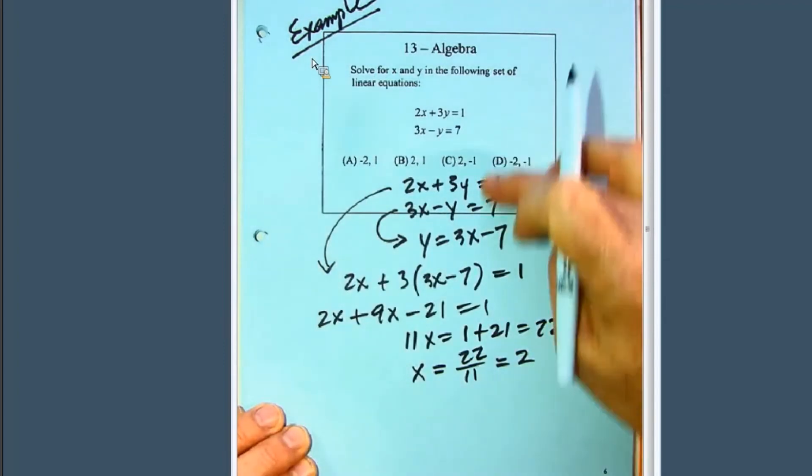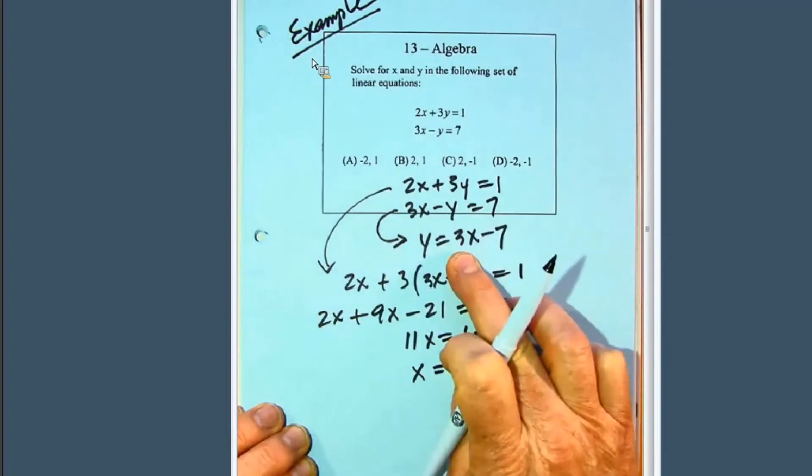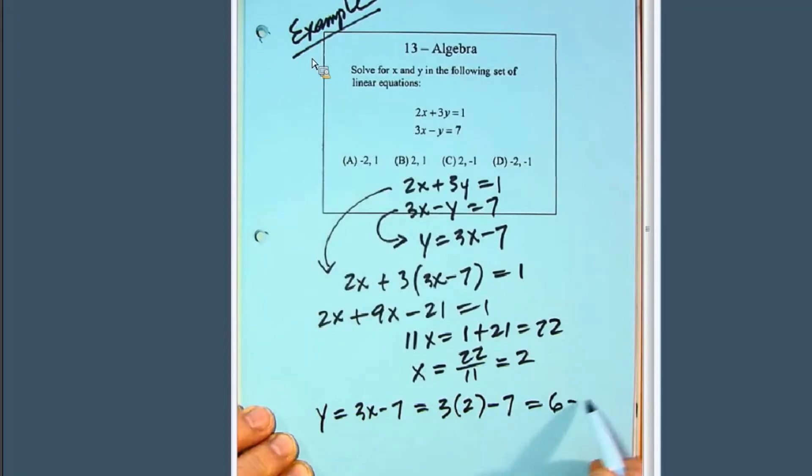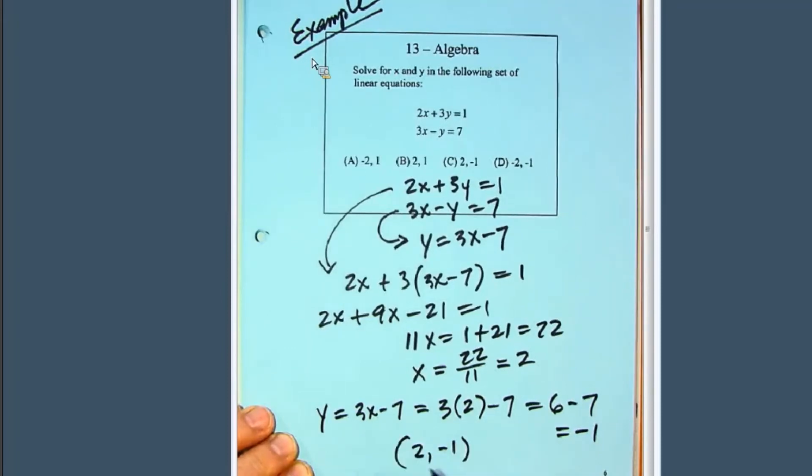So what we've done is the Gauss elimination, the elimination was to get one of them in terms of the other, substitute it in, get the answer, and then back substitute into here. So this y now equals 3x minus 7, which equals 3 times 2 minus 7, which equals 6 minus 7, which equals minus 1. So therefore, our solution is 2 comma minus 1, which is answer C.